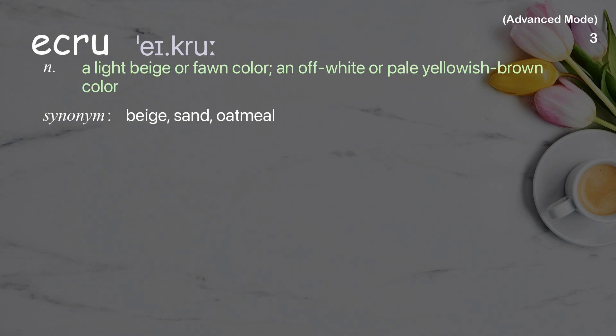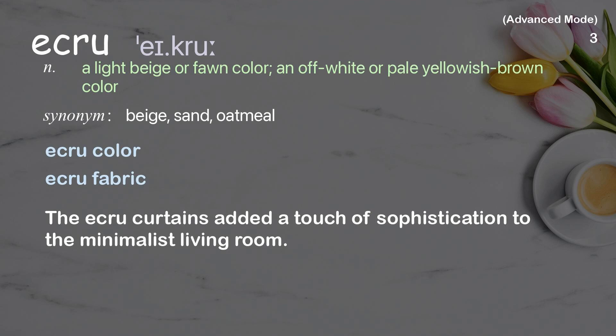Ecru: a light beige or fond color, an off-white or pale yellowish brown color. Examples: ecru color, ecru fabric. The ecru curtains added a touch of sophistication to the minimalist living room.